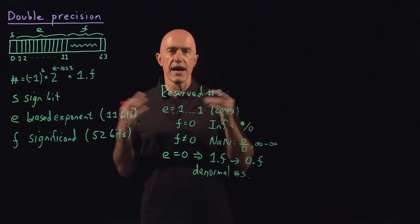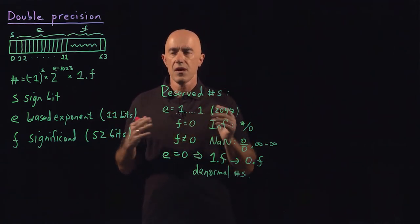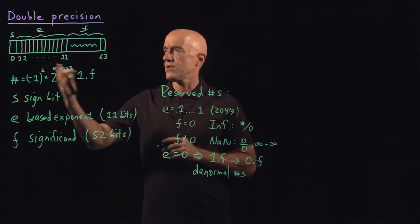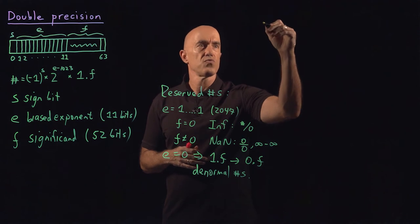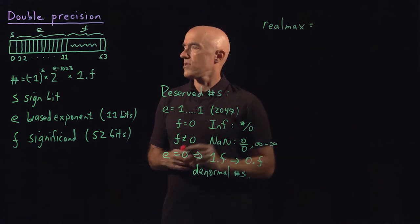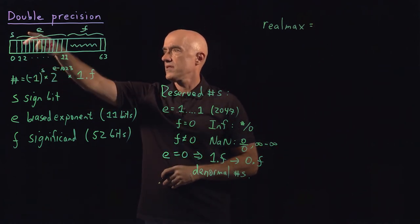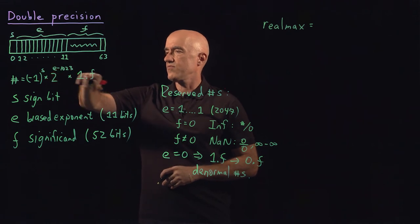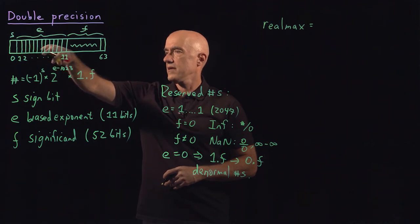It's useful to calculate, and I ask you to do that as a reading problem. What is the largest number that can be represented in this computer? That's called real max. So the largest number, let's say S being zero, the largest number represented would be E being almost all ones.